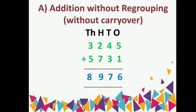1 plus 5 is 6, 4 plus 3 is 7, 2 plus 7 is 9, 3 plus 5 is 8. The answer is 8976. Here we do not need to carryover the numbers.